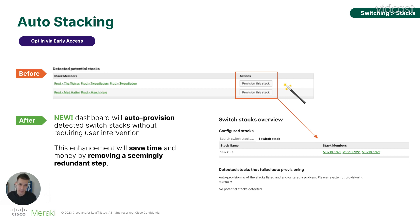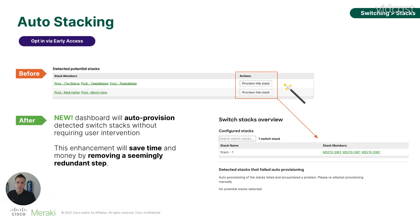So we've done away with that button completely. You'll follow a similar process — physically use the cables and stack the switches — and once Dashboard detects that you've done so, we will automatically provision that stack. You will no longer have to go back into Dashboard and click this button. This will significantly save time on deployment and make things much more efficient. This feature will be available in early access in the next couple of weeks.